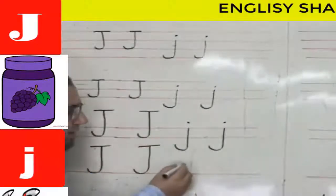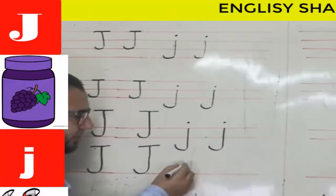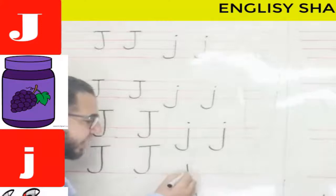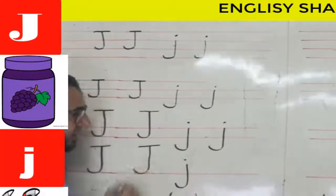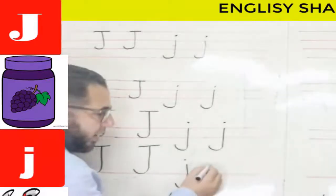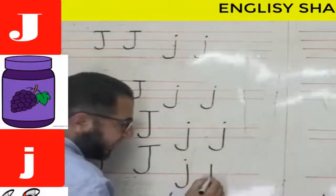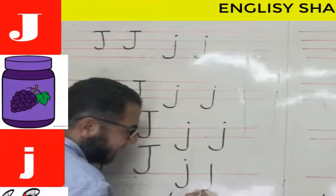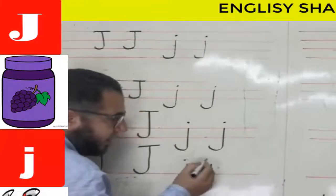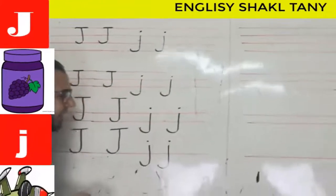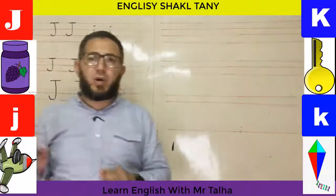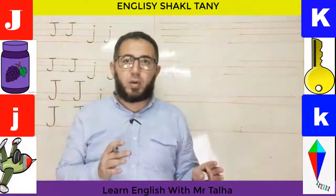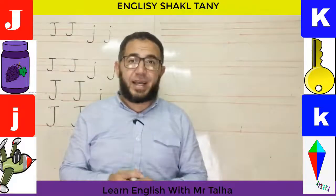When writing lowercase j on one line, I start above the line, go down under the line, curve at the bottom, then put a dot. That's the small j. And that's the way we write J capital and J small on the lines. Let's go to our second letter today — it's called K.